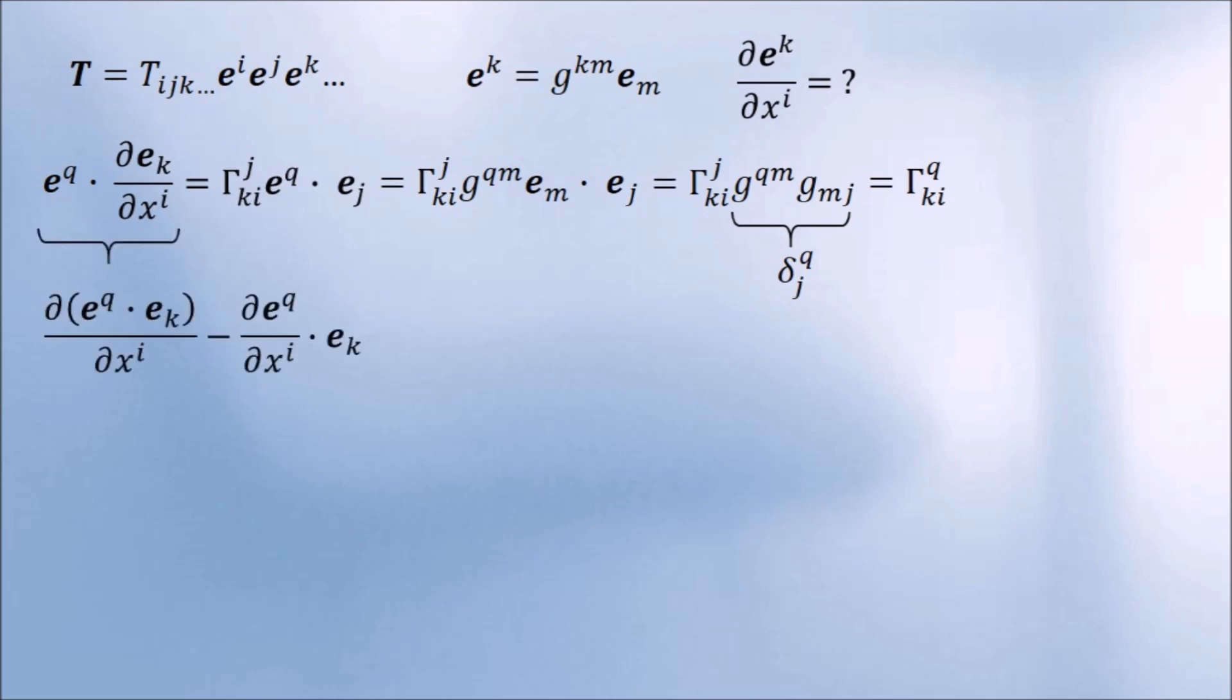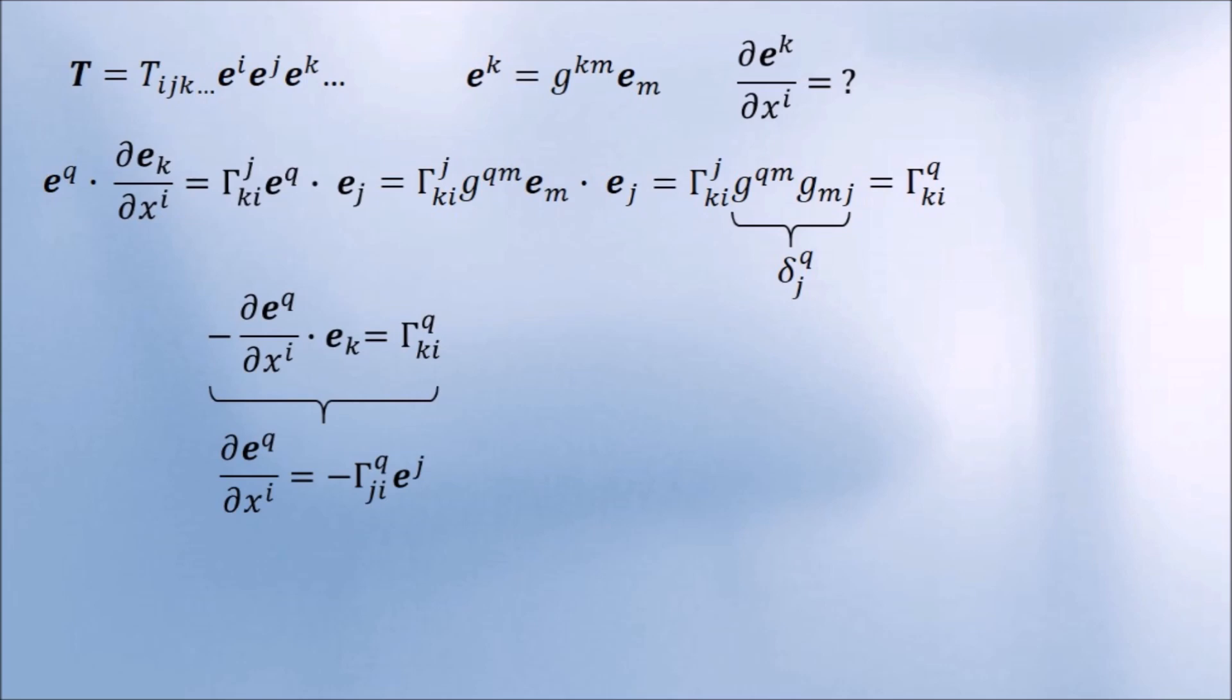But first, we need to know how they behave when differentiated. We can figure this out using the derivative of the lower case bases. Dot both sides with e upper q. The left-hand side can be written like this, where this dot product is just a Kronecker delta, so this term is zero. You can show that this statement is true by dotting both sides with e lower k.